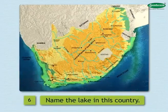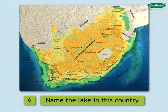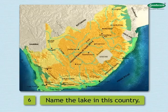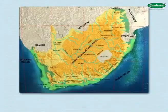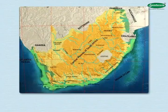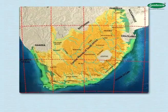6. Name the lake in this country. It is the Vaal Lake. Can you guess what the climate of this country would be after looking at the location and extent? Let us see.